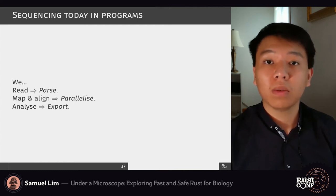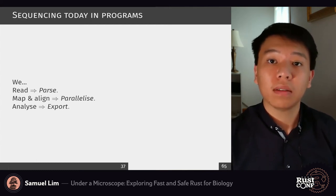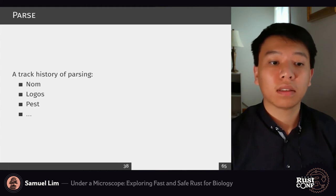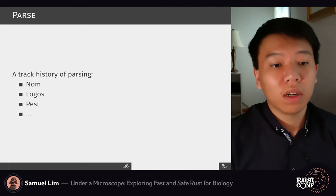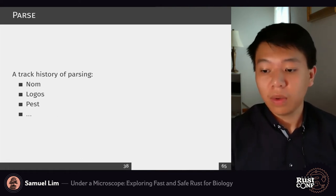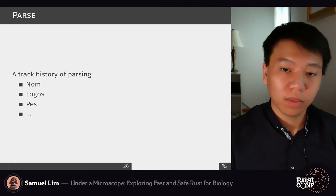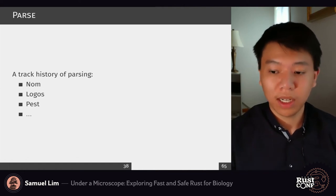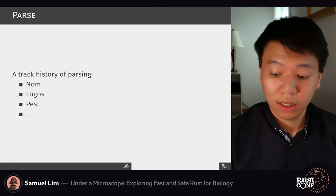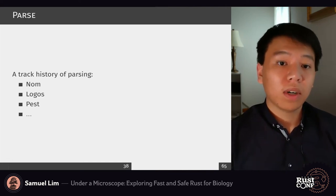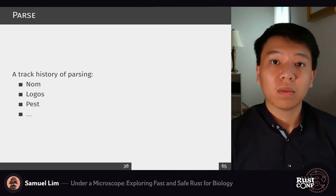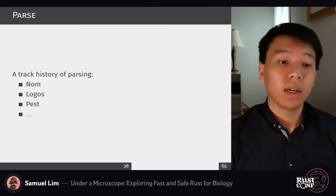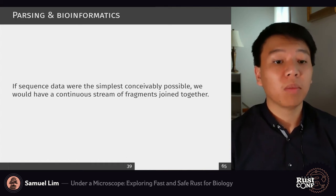As for parsing, Rust has a very strong track record, whether it comes to crates like NOM, lexers like Logos, or PEGs, and so on. Rust has the ability to handle not only long strings and sequences but bigger structures as well. Structured data is sometimes what we most need. If sequence data were the simplest we could conceive, we'd have a continuous stream of fragments of bases joined together — but realistically we require more information and structure around it.